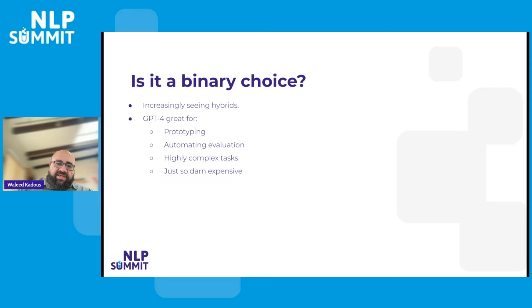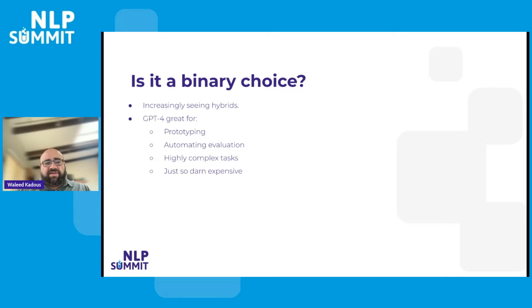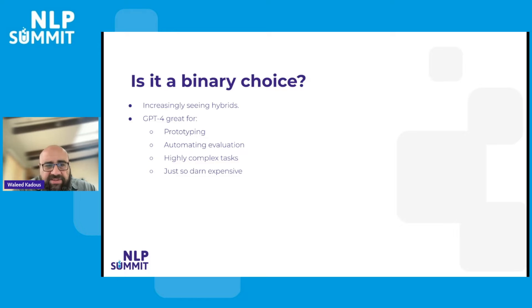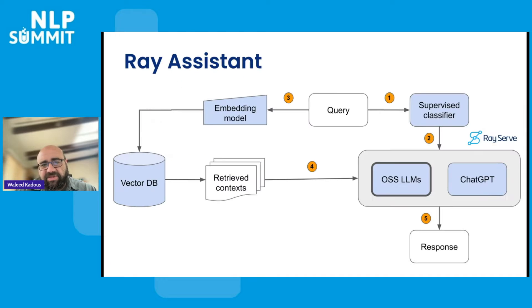You might think you have to choose OpenAI for everything, Anthropic for everything, or open source for everything. But increasingly we are seeing hybrids. One trend we are seeing is that to solve a particular problem, you don't just use one LLM — you use a combination of LLMs. GPT-4 is still the golden standard for prototyping and doing automated evaluations. If a task requires planning or analogical reasoning, the only real downside of GPT-4 is its cost — it's very, very expensive, about 30 times more expensive than some of the open source options.